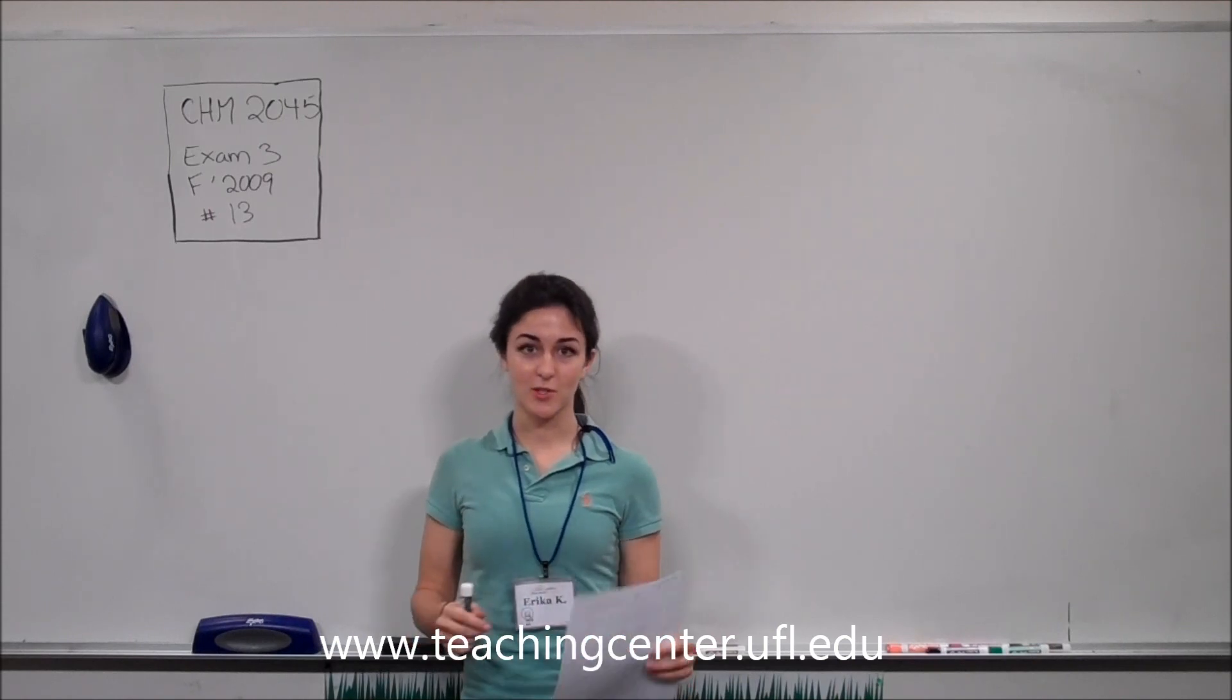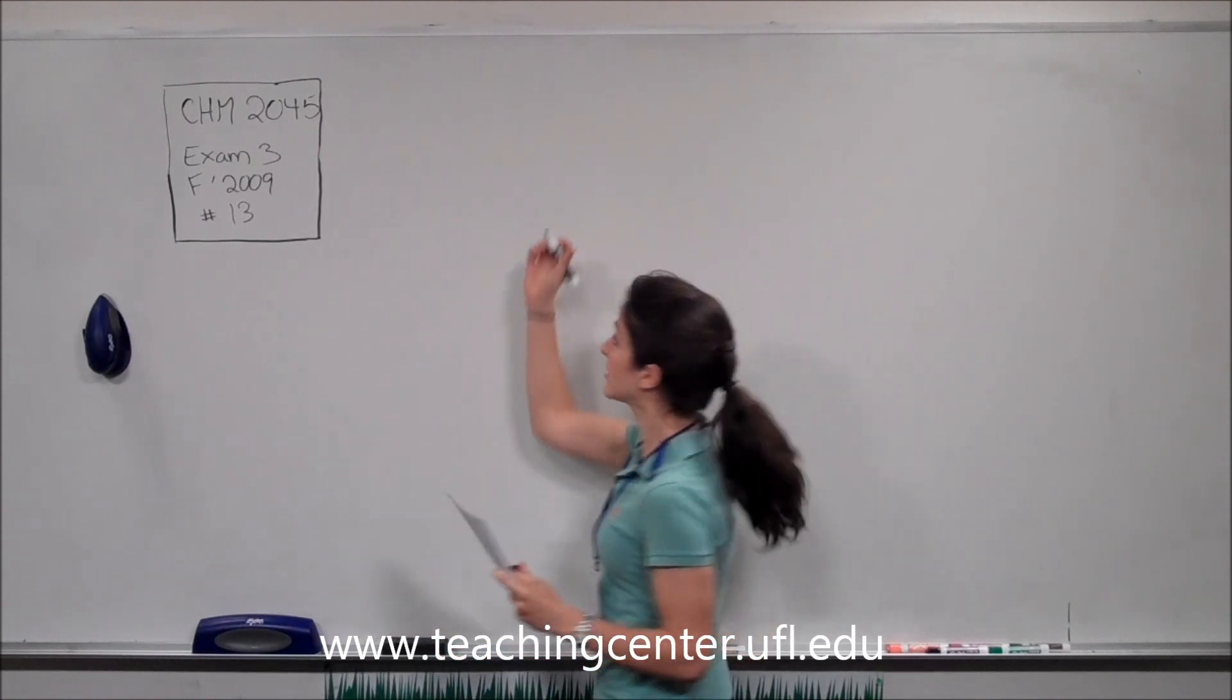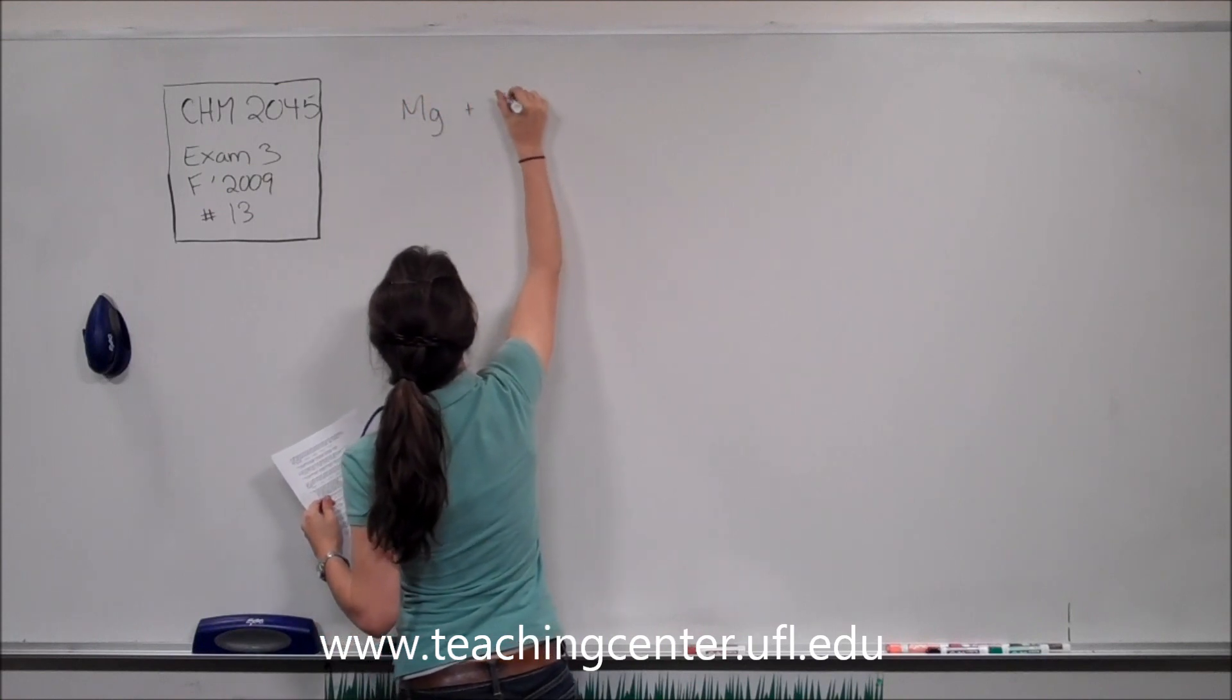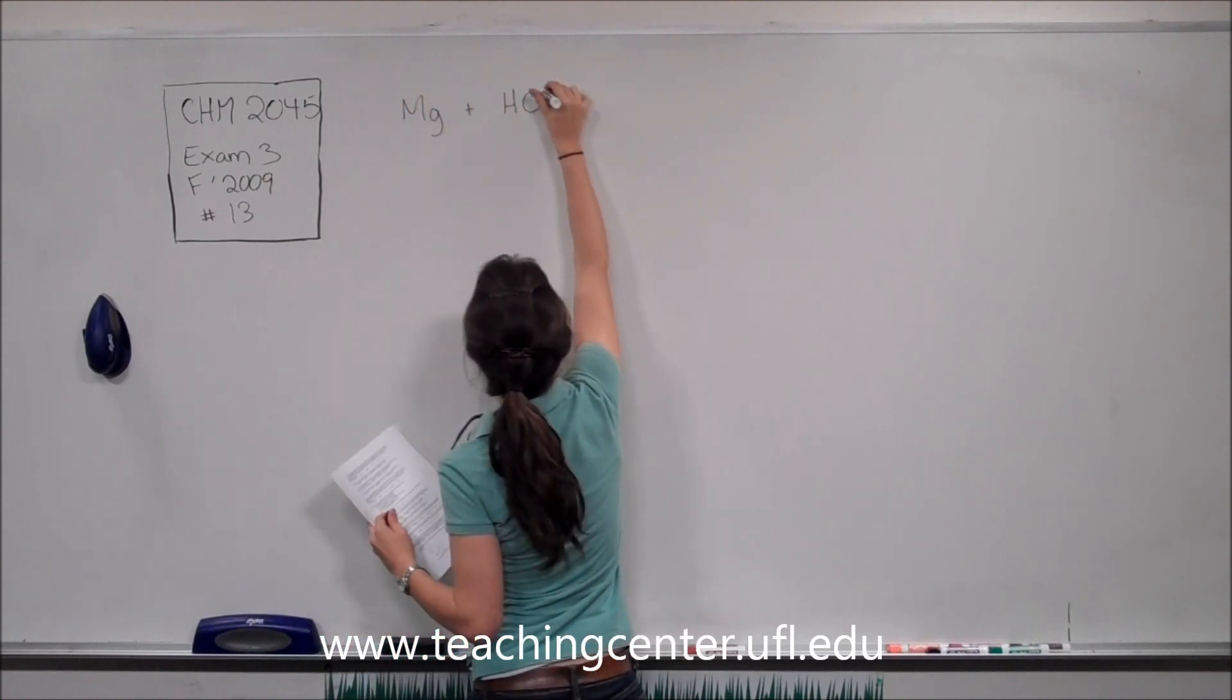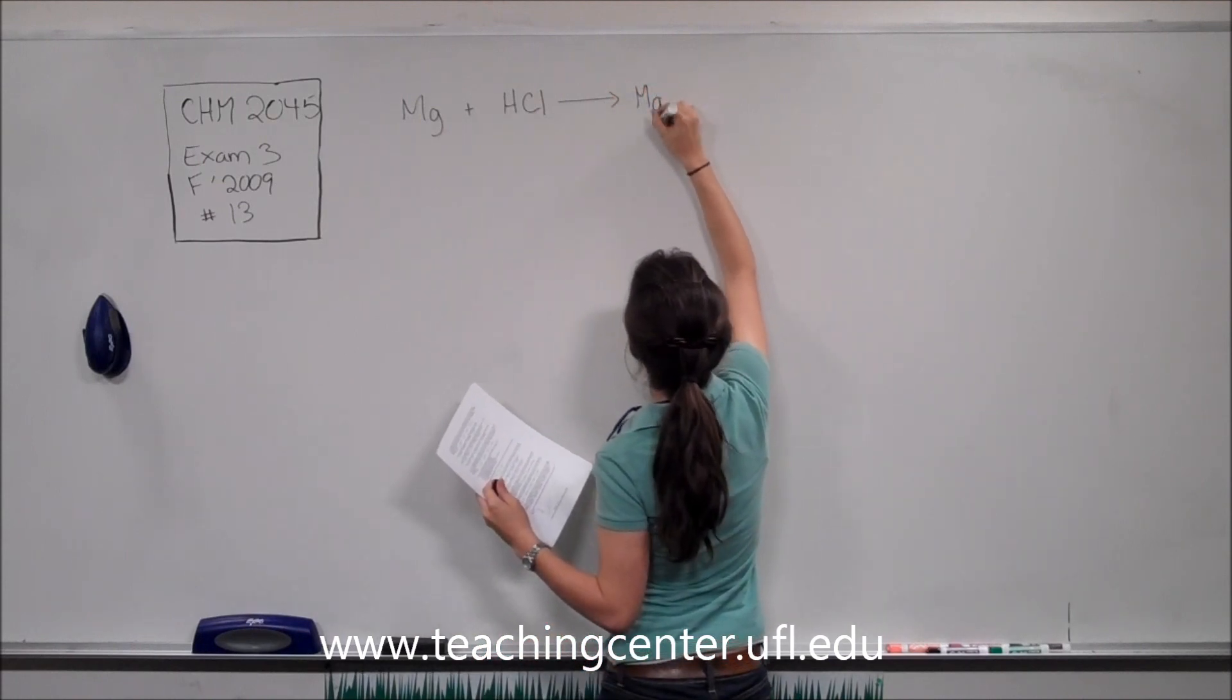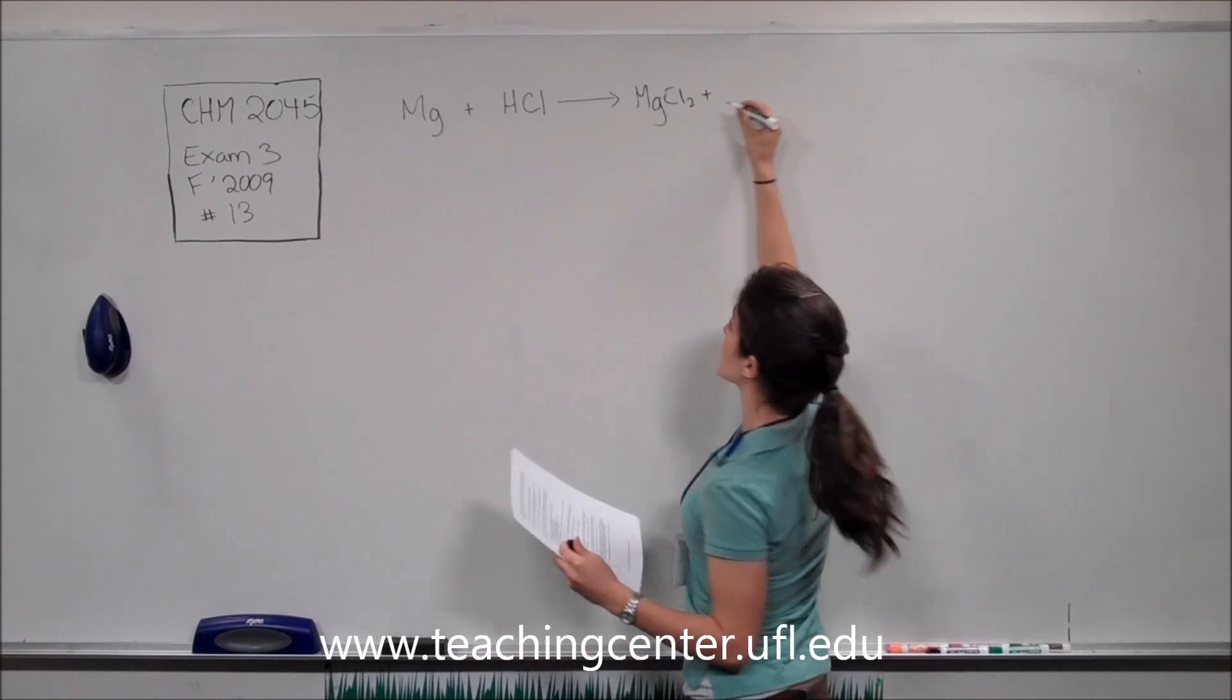So the first thing we'll do is write down what they give us in the problem, which would be our chemical equation. Magnesium plus hydrochloric acid, which goes to produce magnesium chloride plus the hydrogen gas.